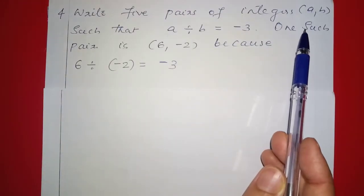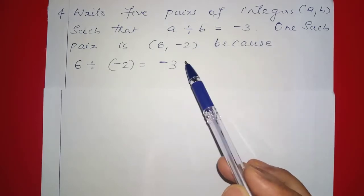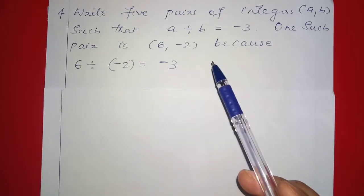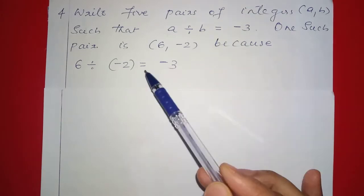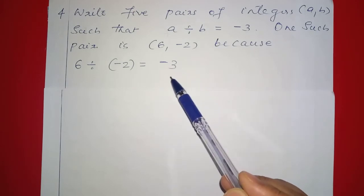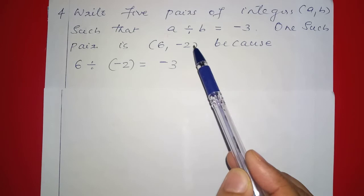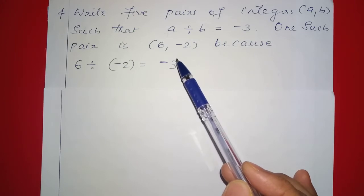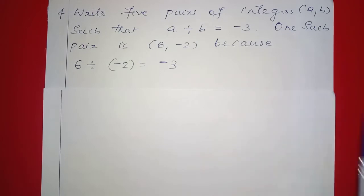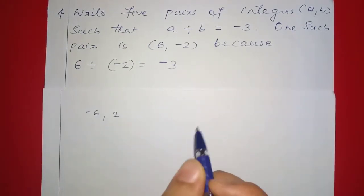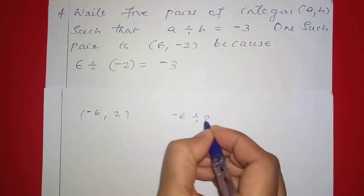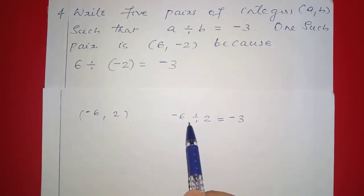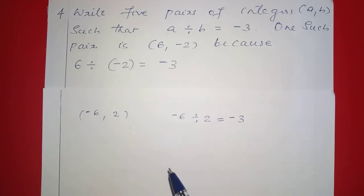Write 5 pairs of integers a, b such that a division b is equal to negative 3. One such pair is 6, negative 2, because 6 division negative 2 is equal to negative 3. Another pair is negative 6, 2, because negative 6 divided by 2 equals negative 3.